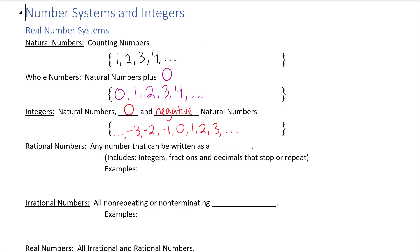The next group is called rational numbers. A rational number is any number that can be written as a fraction. For example, integers are rational — negative two can be written as negative two over one, which is a fraction. Also included are any fractions such as three-fifths or negative seven halves.